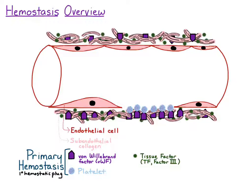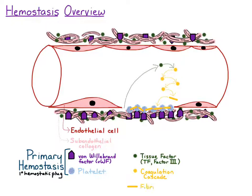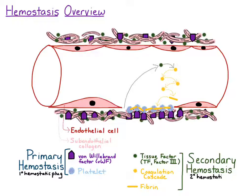Now at the same time, tissue factor is released from the subendothelial collagen, and tissue factor then sets off this cascade of events, which results in activation of different proteins within the blood vessel. And this coagulation cascade eventually results in the formation of fibrin. So fibrinogen is converted to fibrin, and this fibrin binds to platelets and forms bridges in between platelets, so it essentially firms up the platelet plug. A combination of tissue factor activating the coagulation cascade and the formation of fibrin is what we call secondary hemostasis, or the formation of a secondary hemostatic plug.